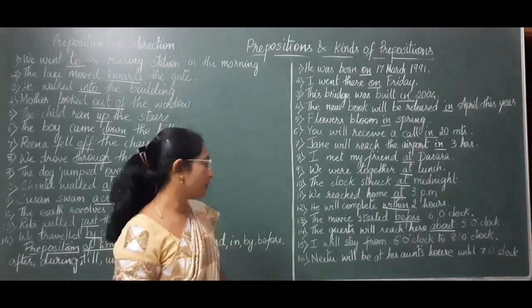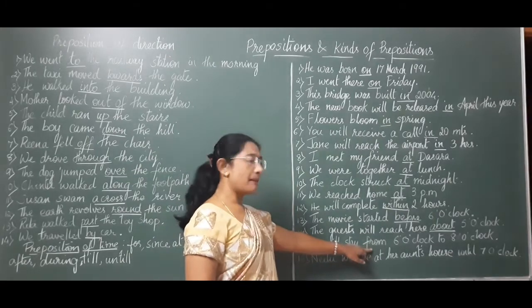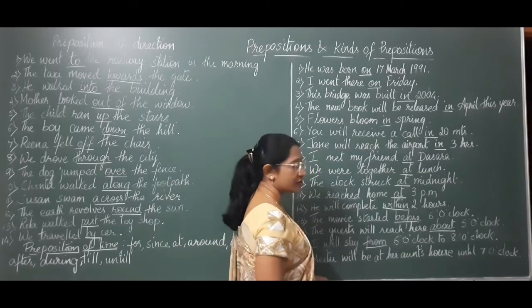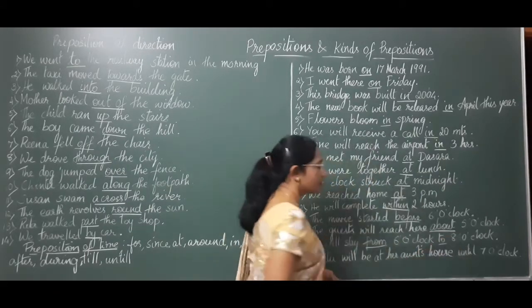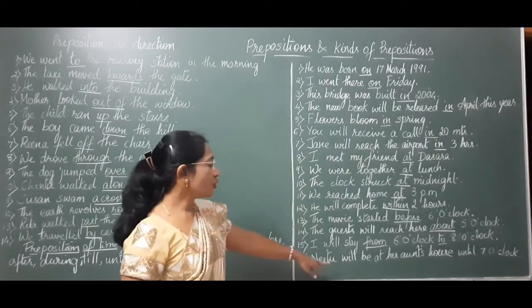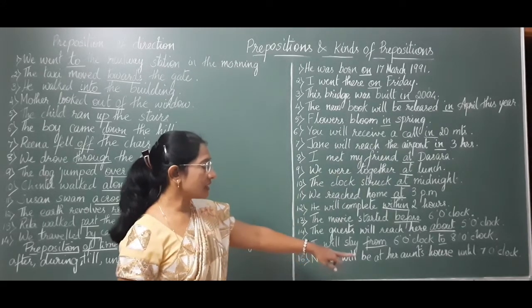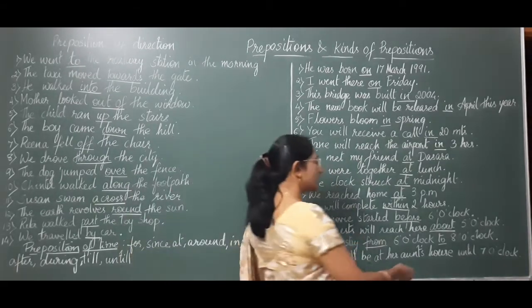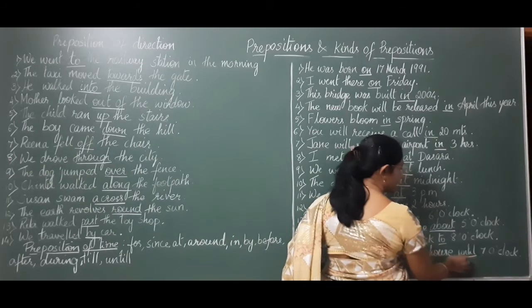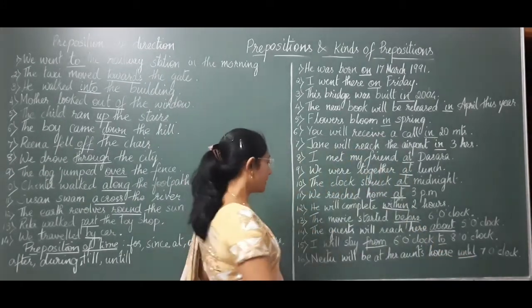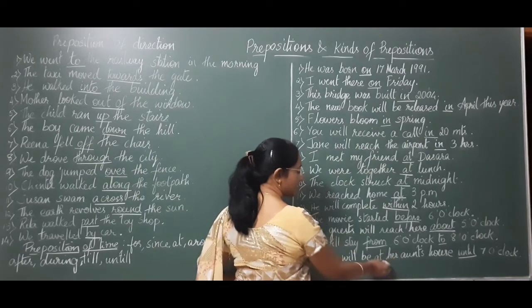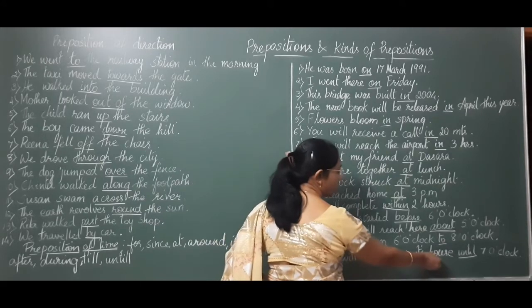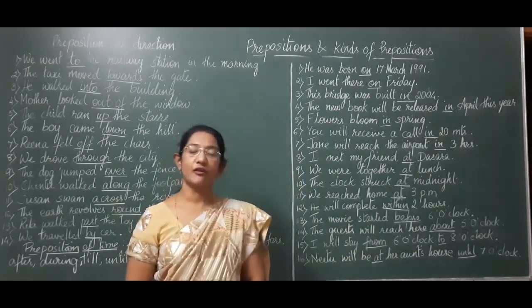'I will stay from six o'clock' — 'from' is preposition of time. 'Neethu will be at her aunt's house until seven o'clock' — 'until' refers to time, while 'at' here refers to the place (aunt's house), making it a preposition of place.